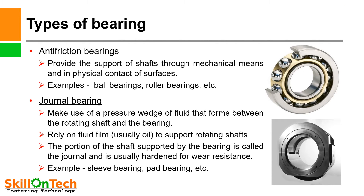There are two types of bearings: anti-friction bearings and journal bearings. A picture of an anti-friction bearing is shown on the top and a journal bearing is shown at the bottom of the slide.